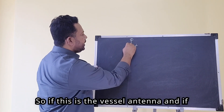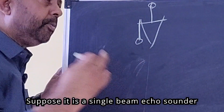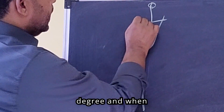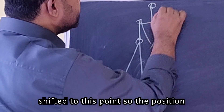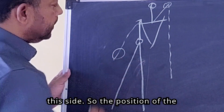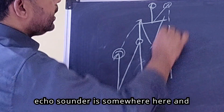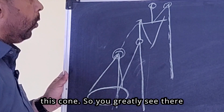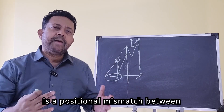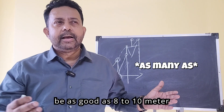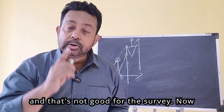Let me draw it on the chalkboard. If this is the vessel antenna and this is the vessel sensor — suppose it is a single beam echo sounder sending out a cone somewhere between 7 to 22 degrees — when the vessel rolls, the antenna will be shifted to one point, so the position of the vessel will be here, and the echo sounder will also be shifted. The position of the echo sounder is somewhere different from the position of the antenna, and the echo sounder will gather data from within its cone. So you can clearly see there is a positional mismatch between the depth being acquired and the position it is supposed to show — there can be as much as 8 to 10 meters difference at a depth of about 30 meters, and that's not good for the survey.